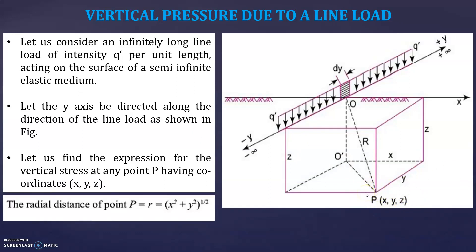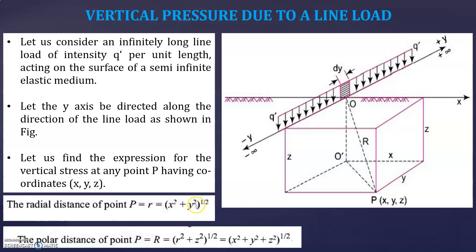The radial distance at point P, denoted small r, equals the square root of (x² + y²). The polar distance of point P, denoted capital R, is given by the square root of (r² + z²), which expands to the square root of (x² + y² + z²).